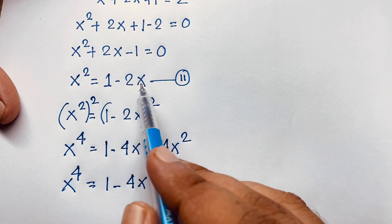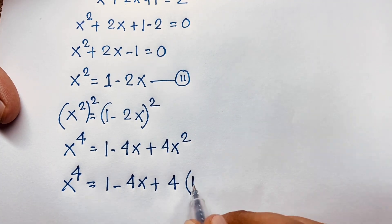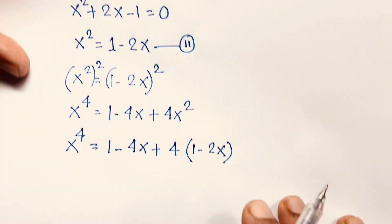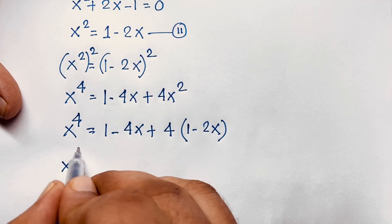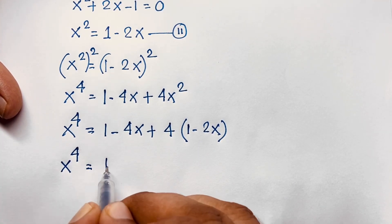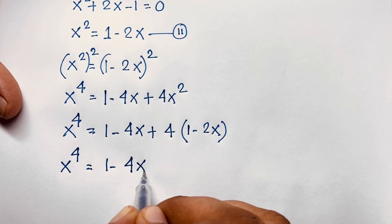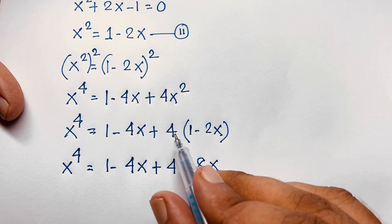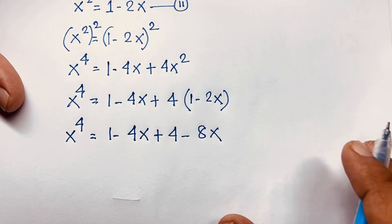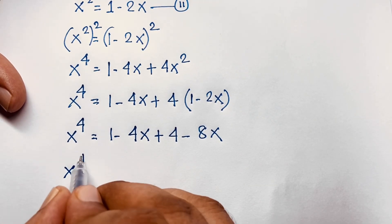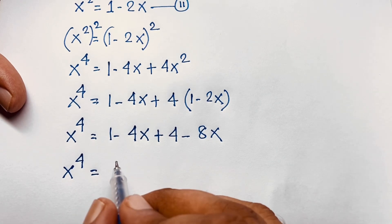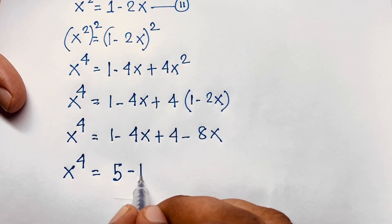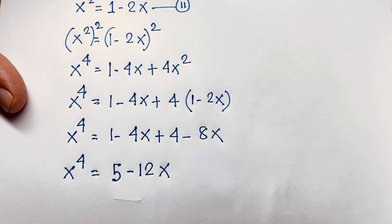Recalling that x² equals 1 minus 2x, I substitute this value: x^4 equals 1 minus 4x plus 4 times (1 minus 2x). That gives 1 minus 4x plus 4 minus 8x, so x^4 equals 5 minus 12x.